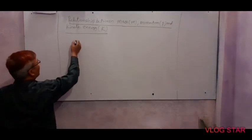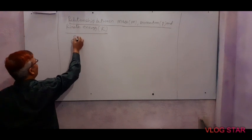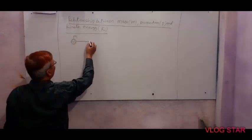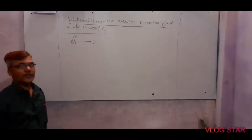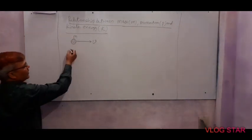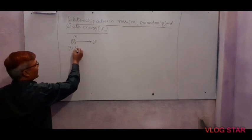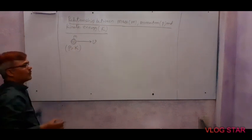Suppose there is an object which has mass m and is moving with velocity v. Since the body is in motion, it will possess both momentum and kinetic energy.